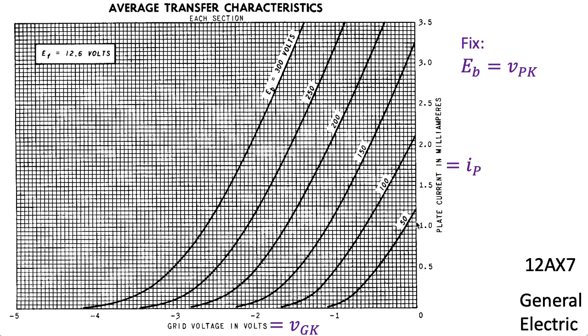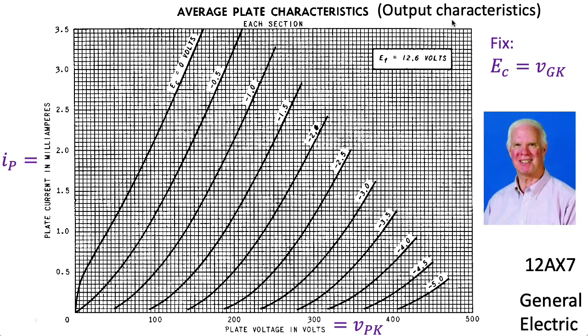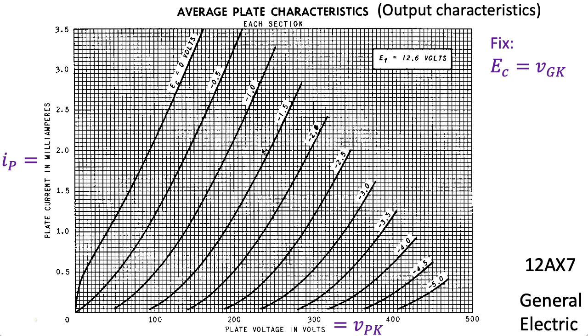Now, if we keep plotting the current on the vertical axis, but swap the roles of VGK and VPK, we come up with a set of curves like this. The data sheet calls these average plate characteristics. My colleague Marshall Leach liked to call these output characteristics. And here we have a family of curves associated with fixing a particular VGK. And here we see how the current varies with changes in the plate to cathode voltage. Remember, VGK can't be positive, so we don't have curves up here in the upper left corner. And this curve here for VGK equals zero, this is essentially the most current you can get for a given plate to cathode voltage. And this current goes down as you decrease the voltage on the grid. The data sheet calls the grid to cathode voltage EC, no idea why.